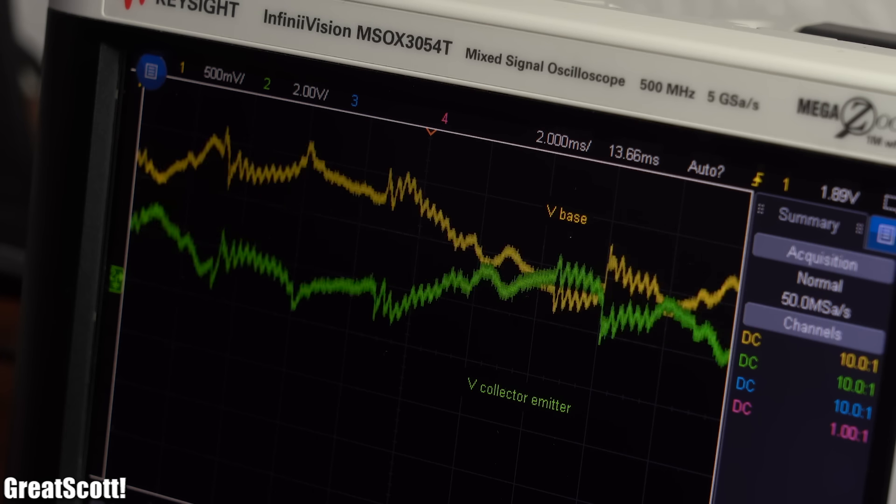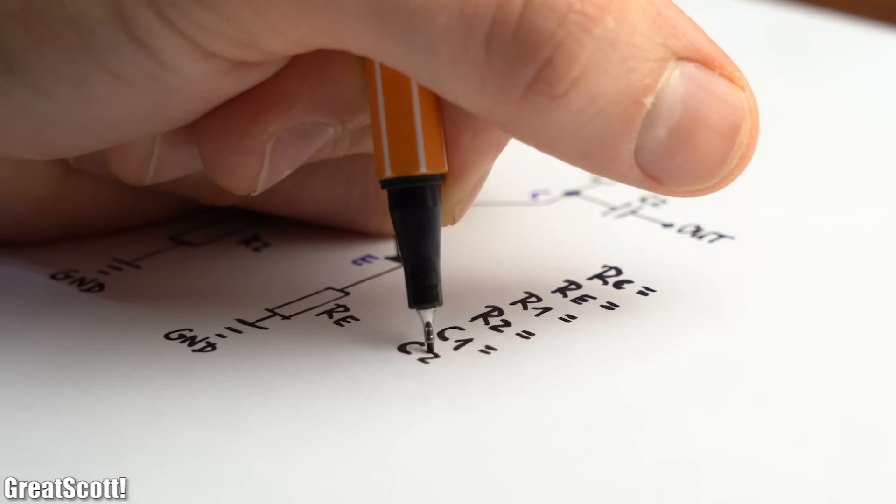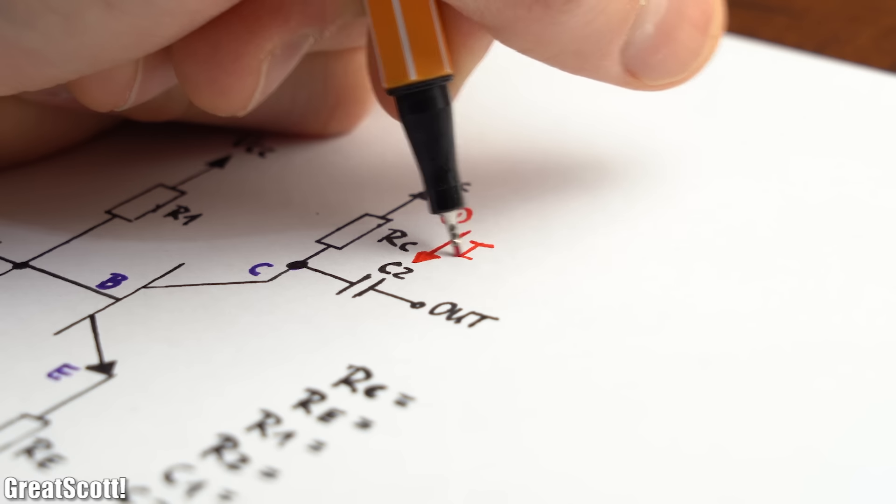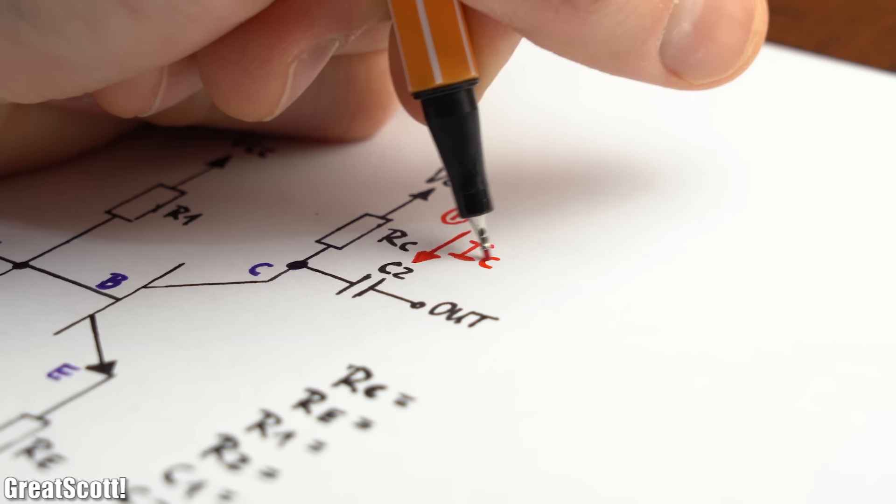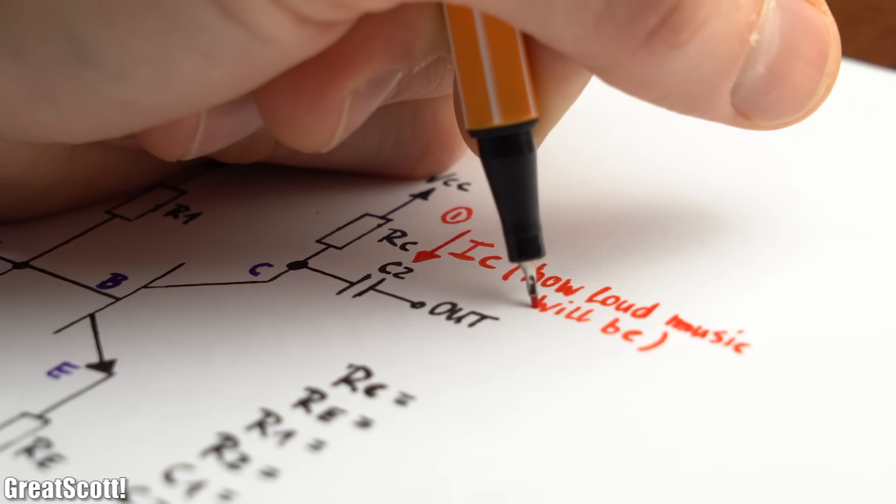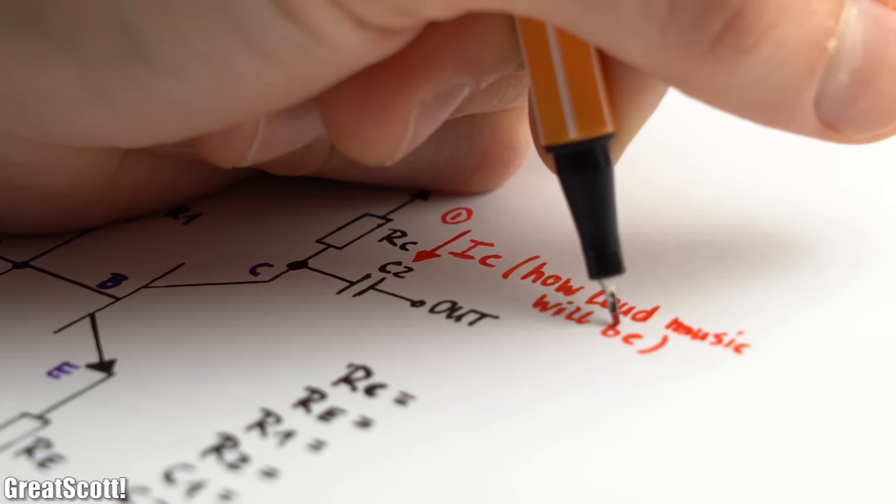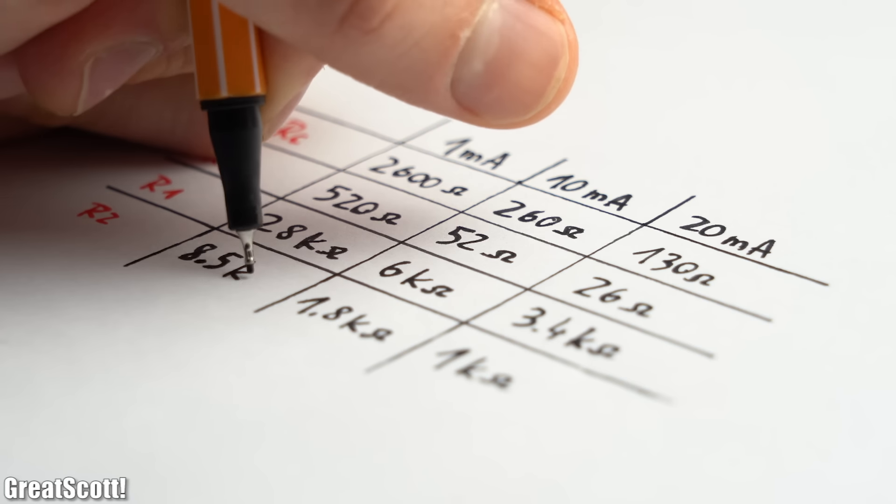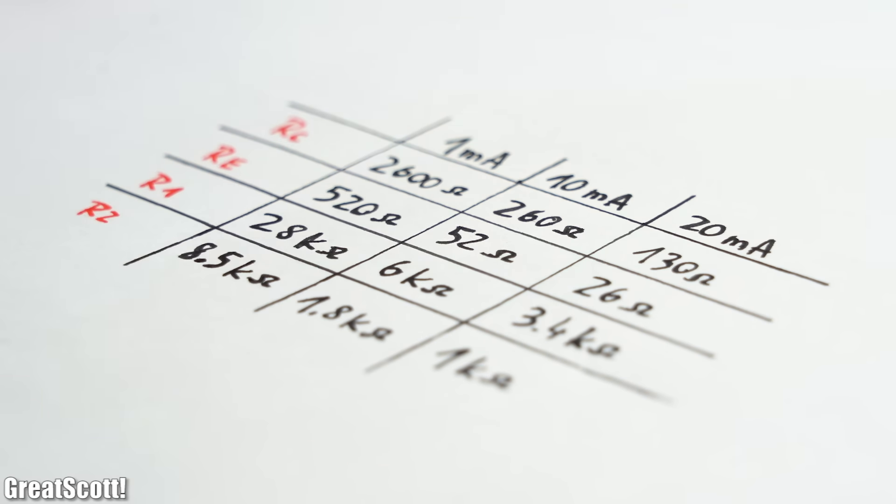And with the basic functional principle out of the way, let's start to select values for the components. To do that, I firstly had to decide on a collector current, which later directly determines how loud the amplified music will be. I did calculations and practical tests for 1mA, 10mA, and 20mA.